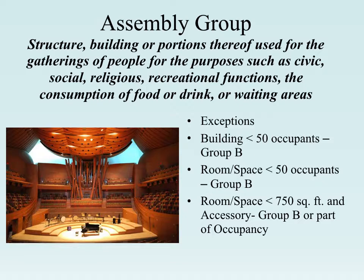The business occupancy type doesn't have as strict rules as the assembly group. Once you get to 50 or more occupants, you are definitely an assembly. If you have 49 or less, you're going to be Group B. Know that 50 or more is assembly, 49 or less is B. If the space fits 50 people, or if the space is 750 square feet or more, it's A. Less than that, it's B.